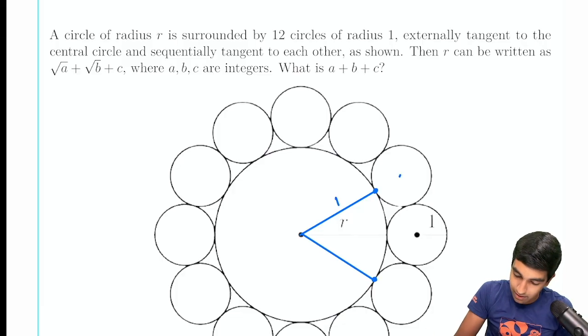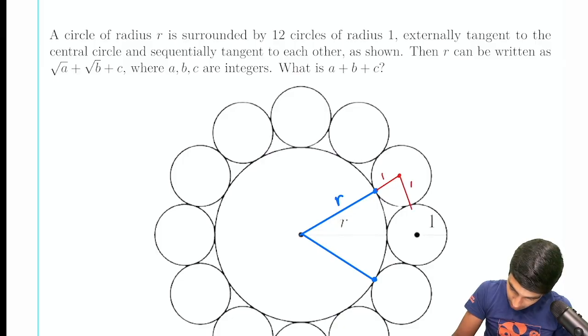And the same thing on this side, let's say this is r. All these circles have radius 1. So we can draw this radius as 1. This radius is also 1. And so on.